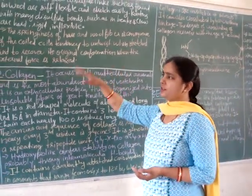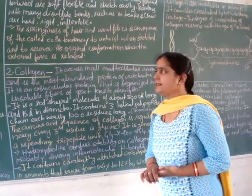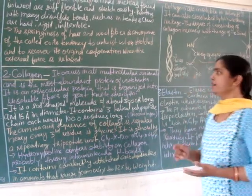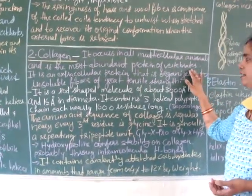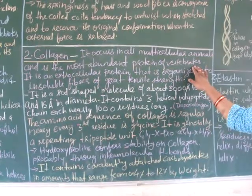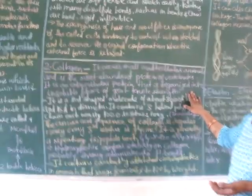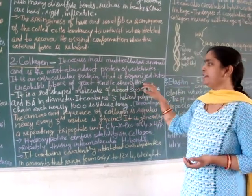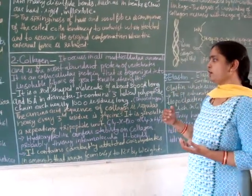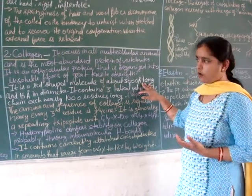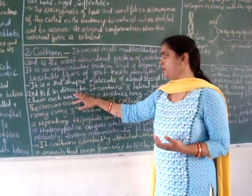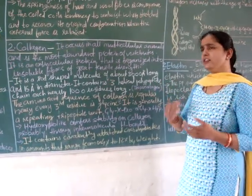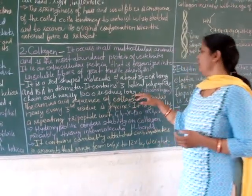That is all about the structure of alpha keratin. The next example is collagen. Collagen occurs in all multicellular animals and is the most abundant protein of vertebrates. It is an extracellular protein organized into insoluble fibers of great tensile strength. It is a rod-shaped molecule of about 3000 Angstroms long and 15 Angstroms in diameter, and it contains three helical polypeptide chains, each nearly 1000 residues long.